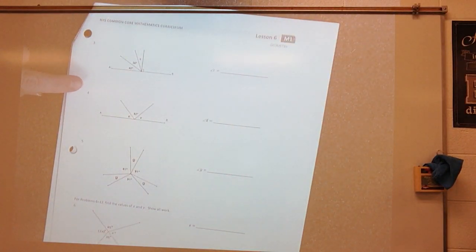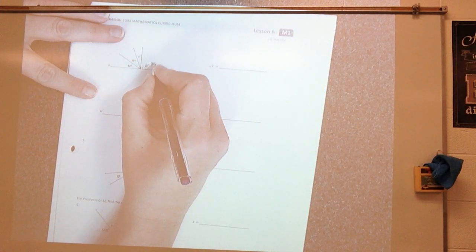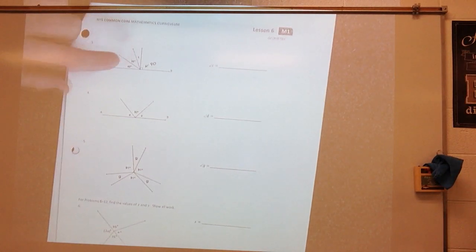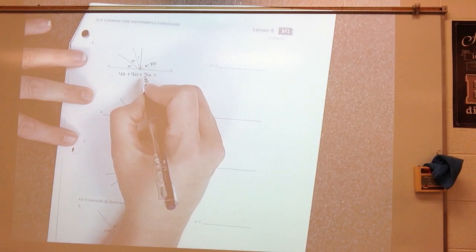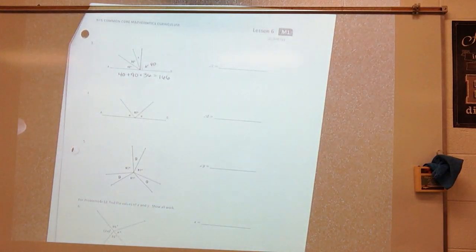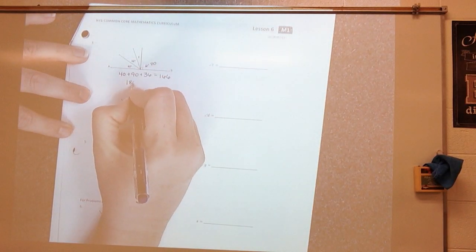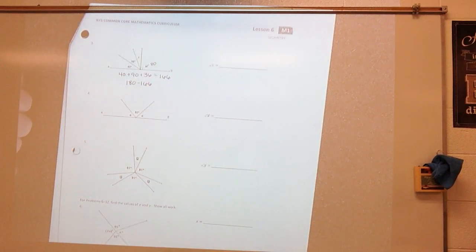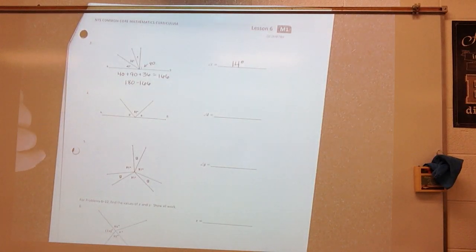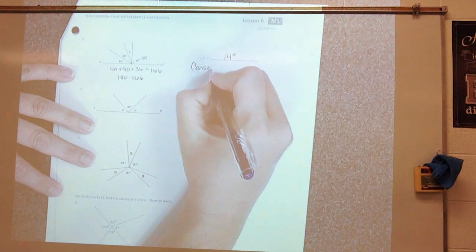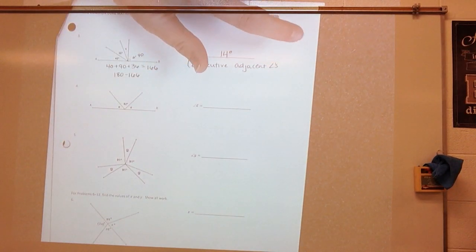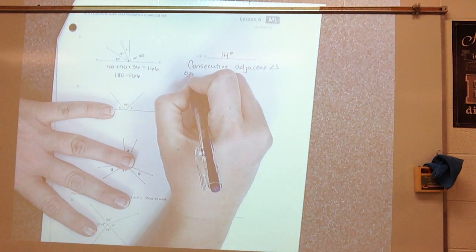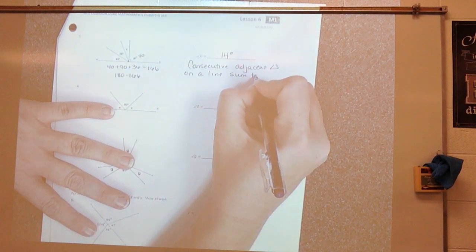Look at number three. I know this is 90 degrees, this one's 40, and this one's 36. I have a straight line here with consecutive adjacent angles. So I'm going to add all of this up: 40 plus 90 plus 36 gives me 166. Then I'm going to subtract that from 180, which gives me 14 degrees. Consecutive adjacent angles on a line sum to 180 degrees.